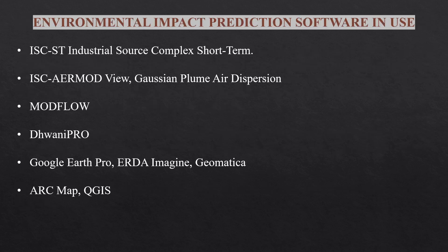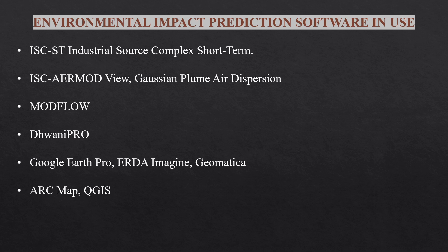There are several software tools used for environmental impact prediction. ISCST (Industrial Source Complex Short Term) and AERMOD are for air pollution prediction for suspended air particulate matter. MODFLOW is for groundwater modeling. Dhani Pro is for sound. Google Earth Pro, ADIS Engine, Geomatica, Arc GIS, ArcMap, and QGIS are for remote sensing and GIS applications.